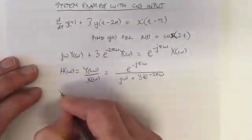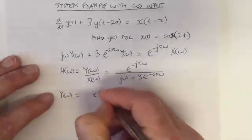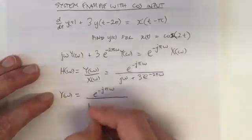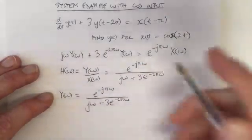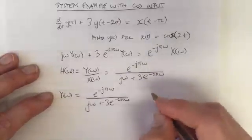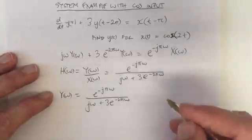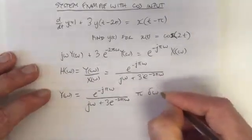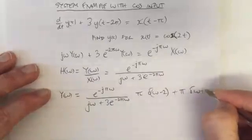So in this case Y(ω) equals e to the minus j·pi·omega divided by (j·omega plus 3·e to the minus j·2pi·omega), that's just H(ω), times the Fourier transform of the cosine function. The Fourier transform of the cosine function gives us pi times delta(ω minus 2) plus pi times delta(ω plus 2).